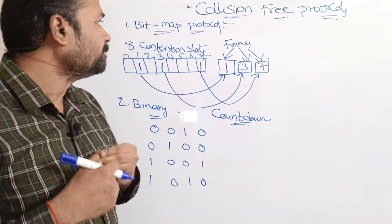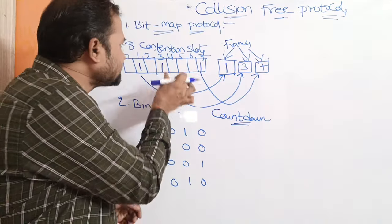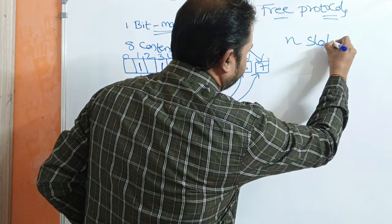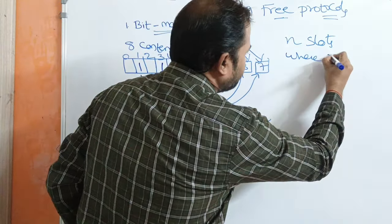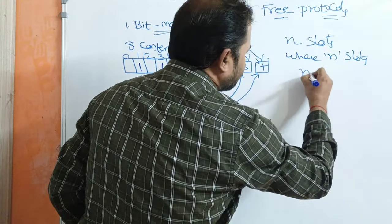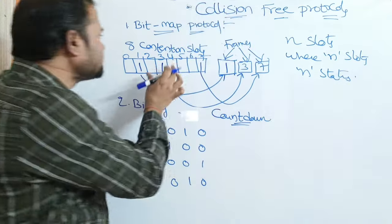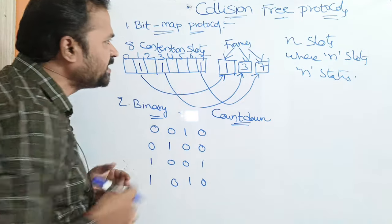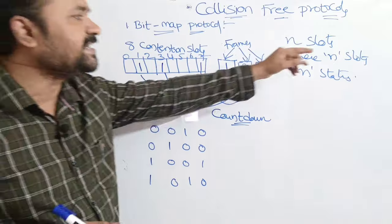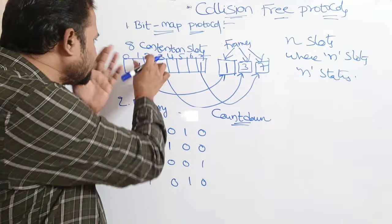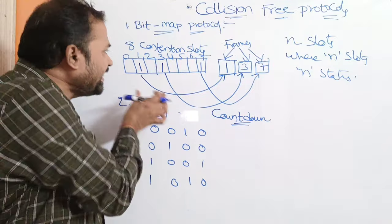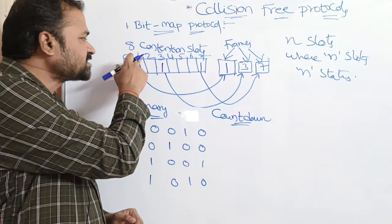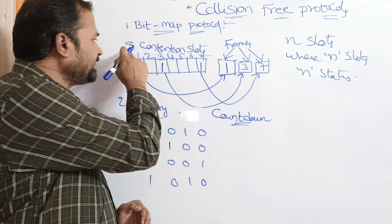First, let's see the bitmap protocol. In a bitmap protocol, there is a contention period. The contention period is divided into n slots, where each slot represents one of n stations. Let us assume that here we have eight contention slots, numbered from 0 to n minus 1. So the 0th slot corresponds to station 0, the 1st slot to station 1, and likewise up to eight contention slots.